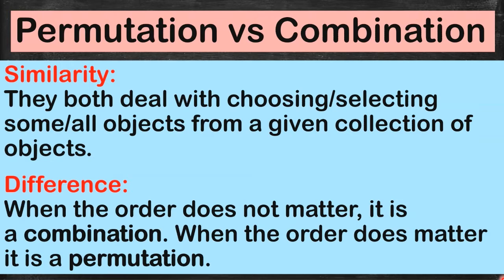What does that mean? In a combination, even if you jumble the objects around, they still pertain to the same thing. But in a permutation, if you change even one position or rank, the meaning changes entirely.